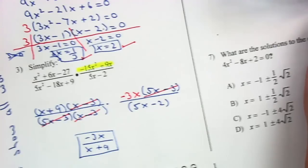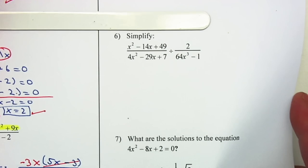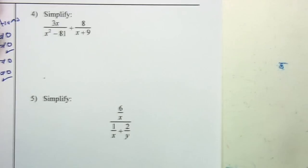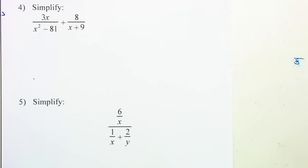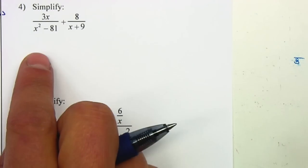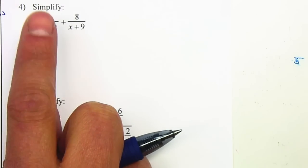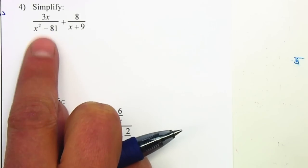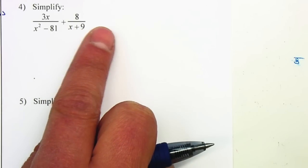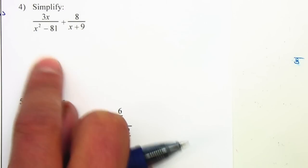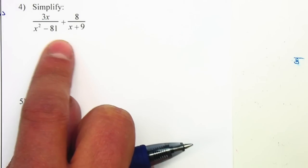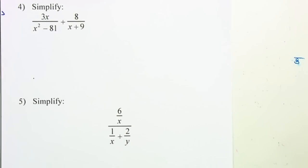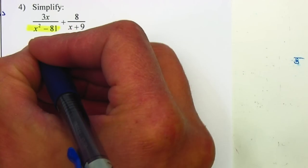Let's continue with problem number 4. We have an addition. Remember, the whole purpose for addition is to make the denominators the same. You want to factor the denominators first. Many of you are multiplying one side by x² - 81 and the other by x + 9, but that's too much work. Factor first: x² - 81 is a difference of two squares, giving (x - 9)(x + 9).